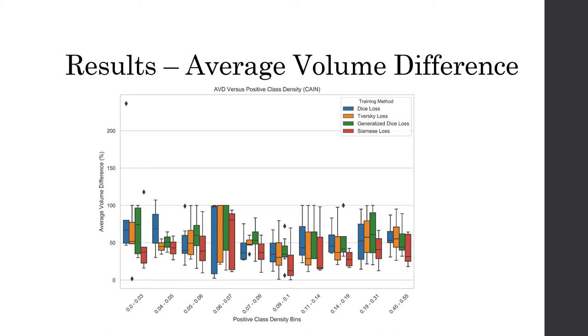As we see in the bins on the lower left, the average volume difference of the lesion loads are significantly lower for our proposed method. We see this trend for most bins, with the median performance being significantly lower than other methods and a lower range of error, highlighting relatively consistent performance regardless of the severity of class imbalance.